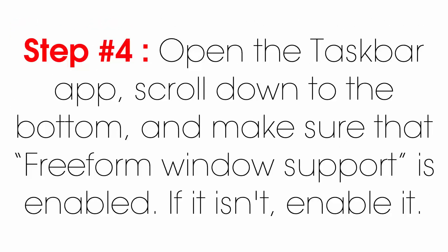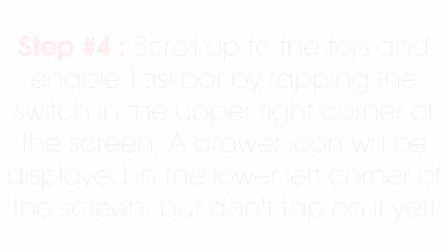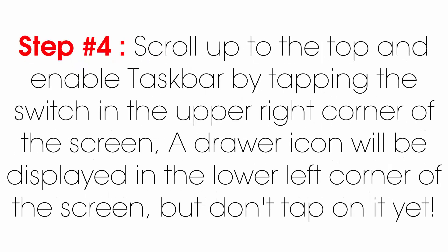Step four: open the Taskbar app, scroll down to the bottom, and make sure that freeform window support is enabled. If it isn't, enable it. Step five: scroll up to the top and enable Taskbar by tapping the switch in the upper right corner of the screen.